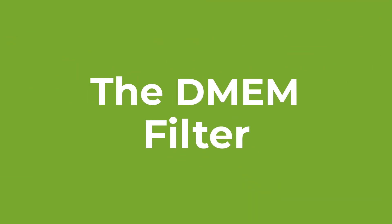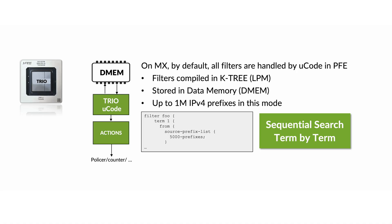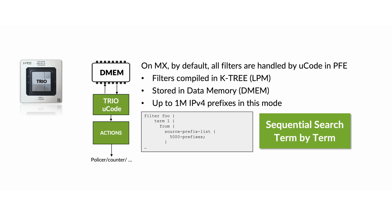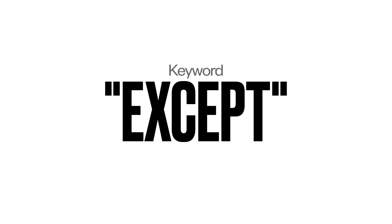On TRIO, we offer three main solutions for filtering. The first is the standard firewall filter, also known as the DMEM filter. The TRIO ASIC fully manages this type of filter in hardware, and all entries reside in the DMEM memory. Filter execution is done sequentially but offers massive scale — for example, up to one million unique prefixes. For IP matching, we use a dedicated LPM structure called K3, which is the same structure used for packet forwarding lookup. DMEM filter match criteria offer a wide range of options, allowing matches against many packet fields as well as metadata such as the forwarding class, SCU, or DCU tags. It also supports the EXCEPT keyword for reverse matches, which can be extremely useful in specific scenarios.